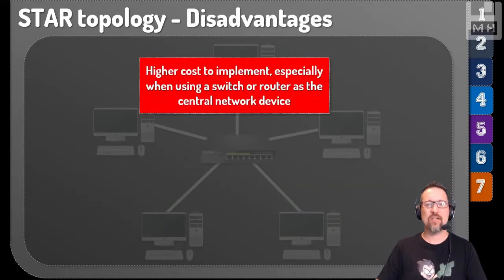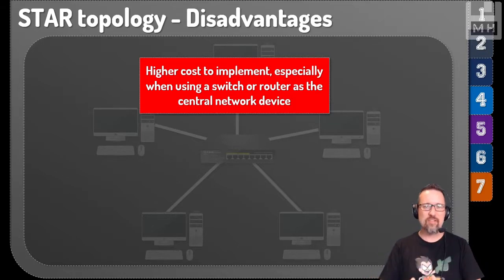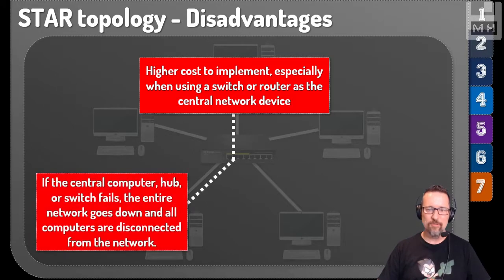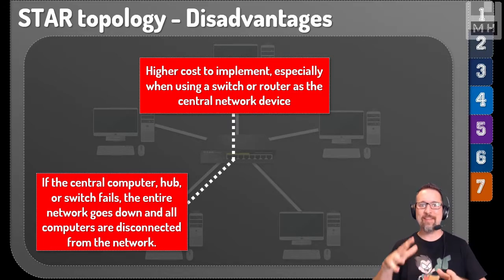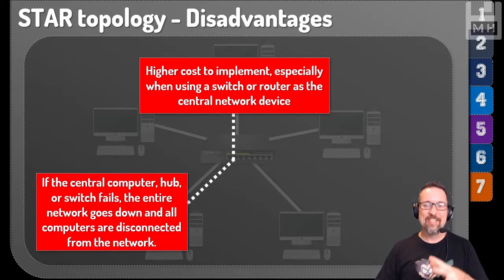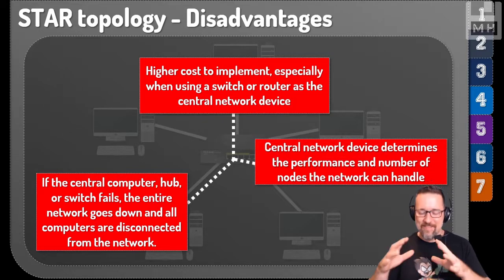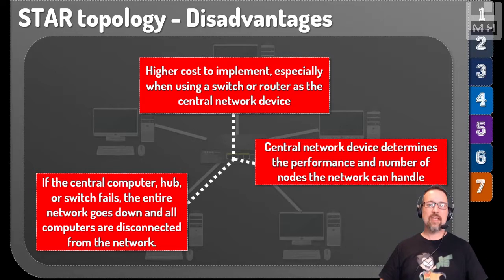Some disadvantages of a star topology: it is more expensive to implement, especially when using switches or routers as the central device. If the central hub or switch fails, the whole network goes down. Also, the central network device determines the performance and the number of nodes the network can handle — so a 32-port switch limits you to 32 computers.